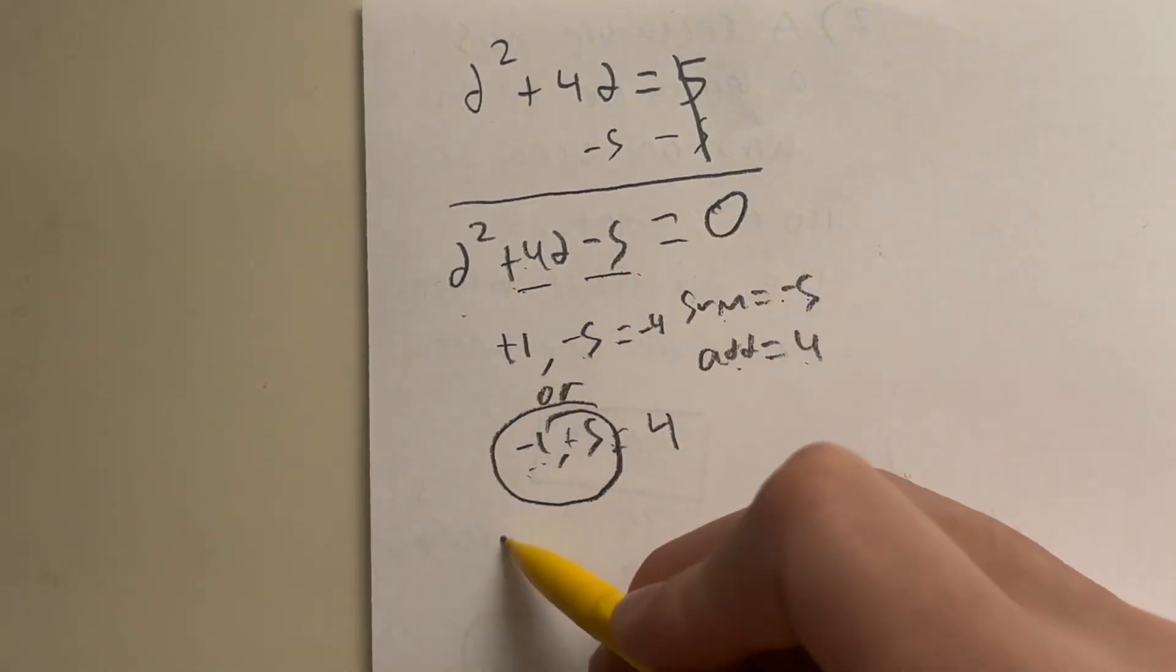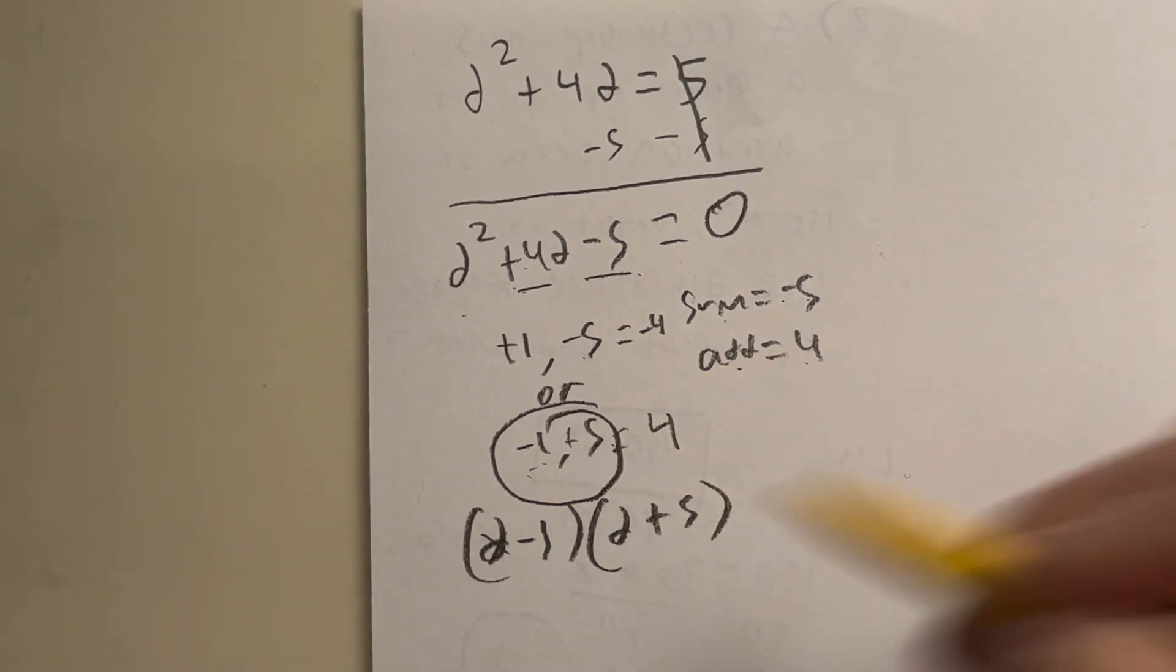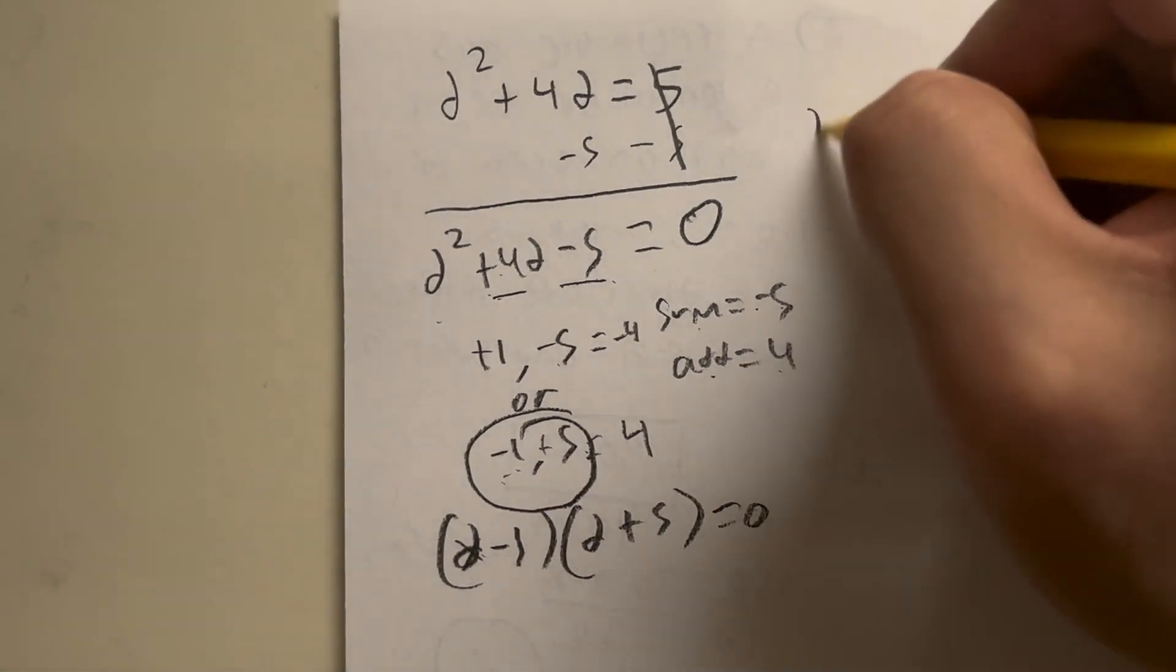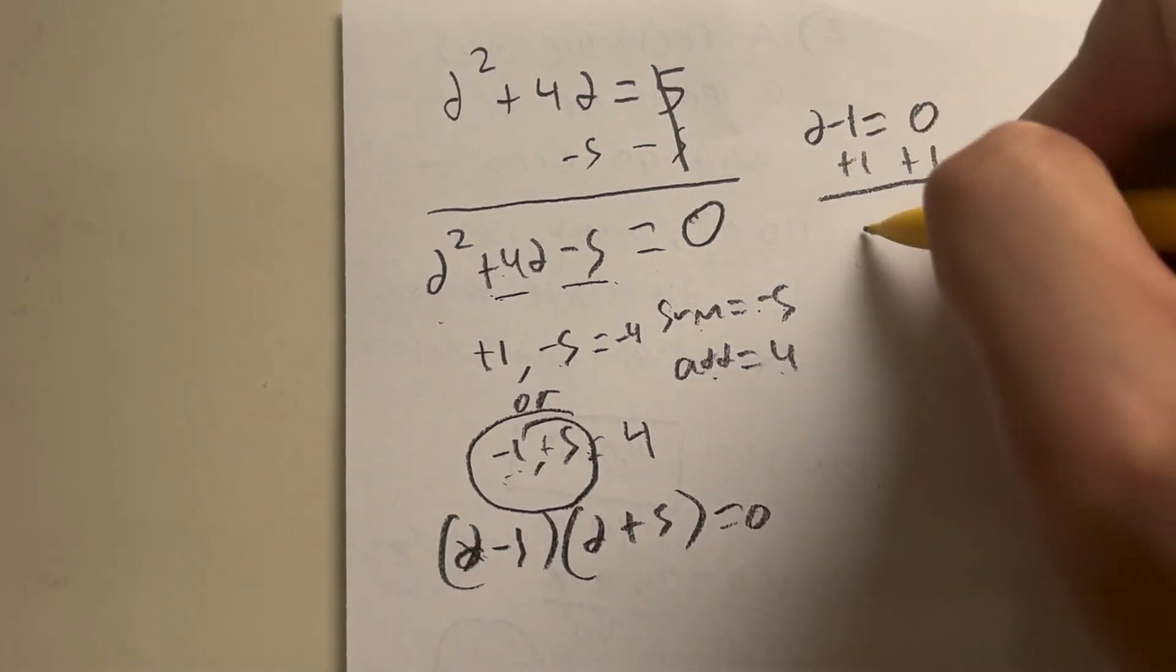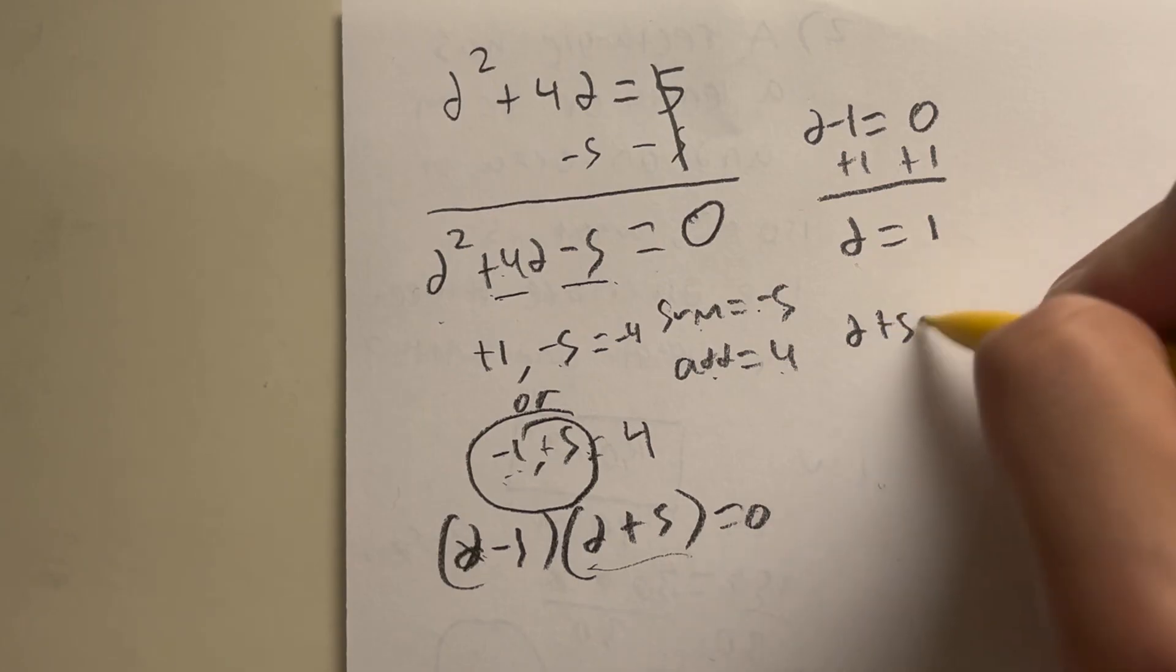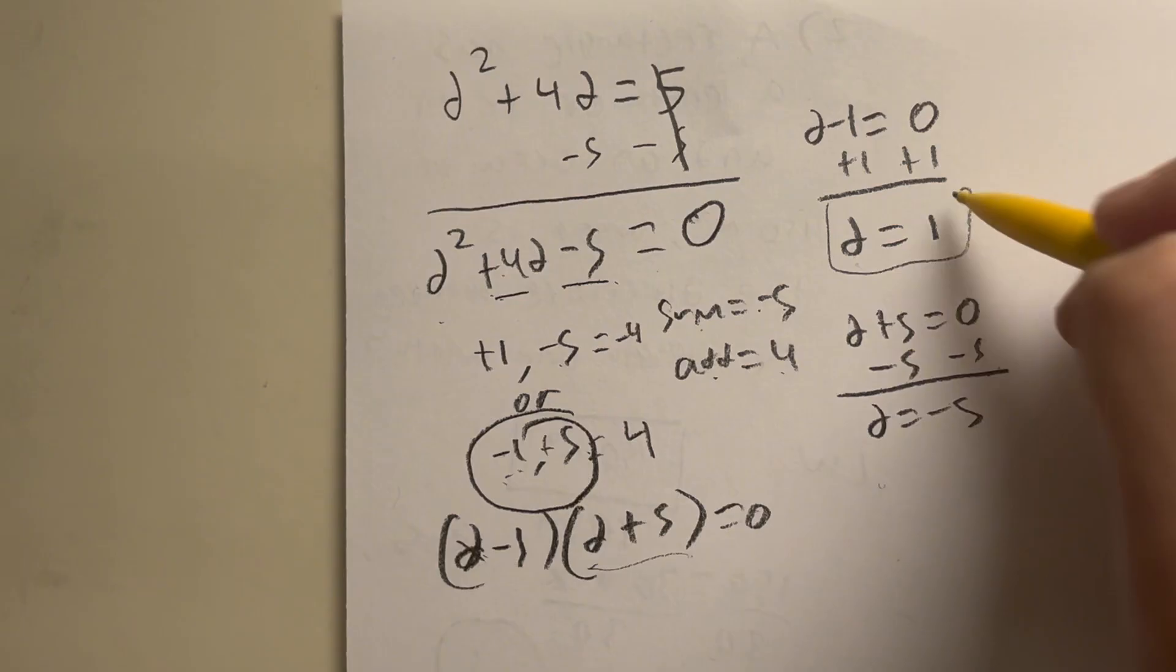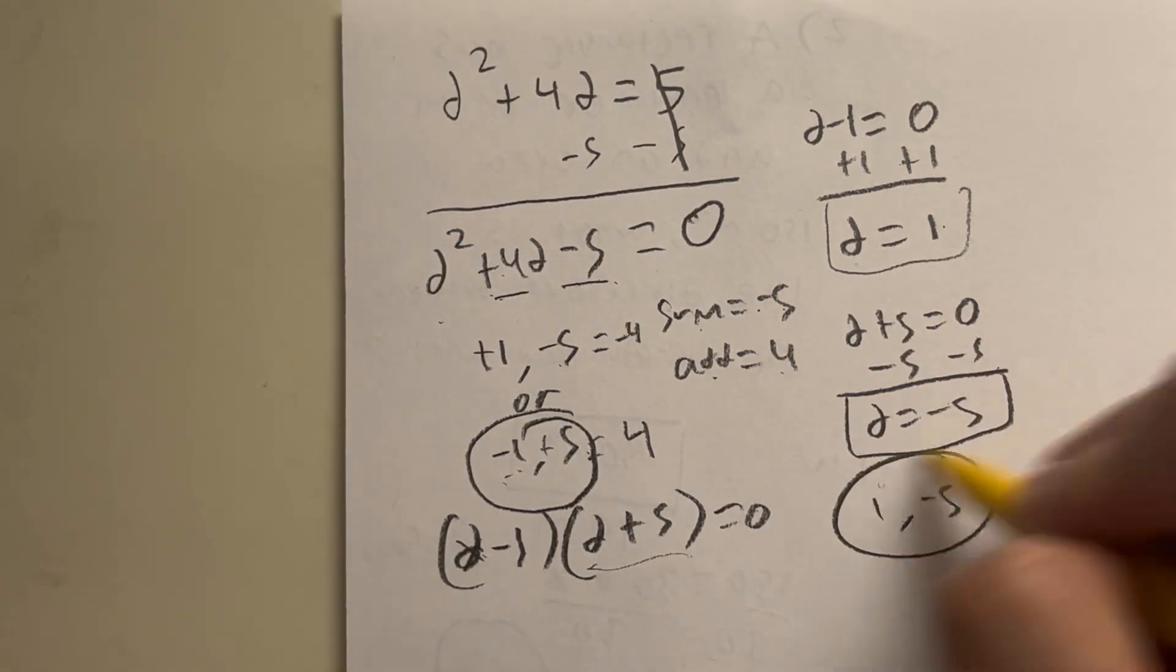So this is the combination we're looking for. So that means when you factor this, this becomes d minus 1 times d plus 5. And then when we do this, when we solve for 0, we solve individually. So first we have d minus 1 is equal to 0, add 1 on both sides, you end up with d is equal to positive 1. And the second equation becomes d plus 5 is equal to 0, minus 5 on both sides, you end up with d is equal to negative 5. Therefore, your answers of d are both 1 and negative 5.